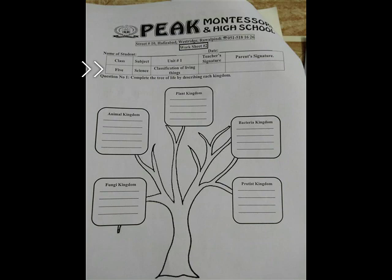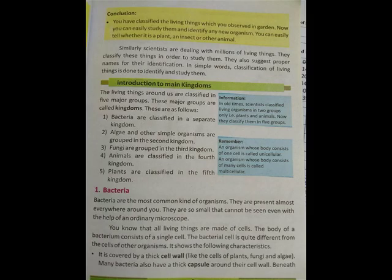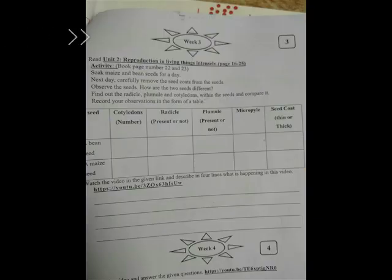Now scientists classify living things into five groups: plant kingdom, animal kingdom, fungi kingdom, bacteria kingdom, and protist kingdom. Next, you will define microorganisms. An interesting fact is that there are two to three billion types of microorganisms on Earth. You will also write an example of each type of microorganism along with a disease caused by them.